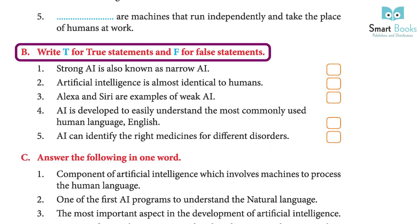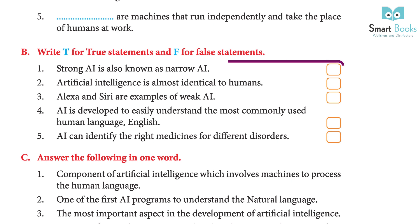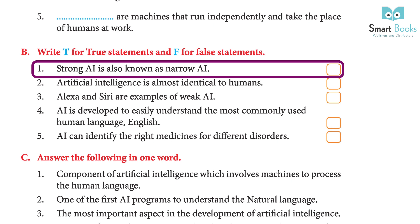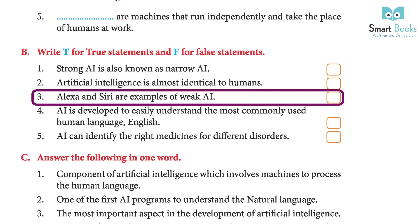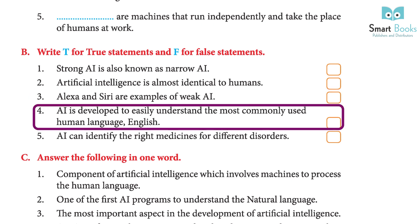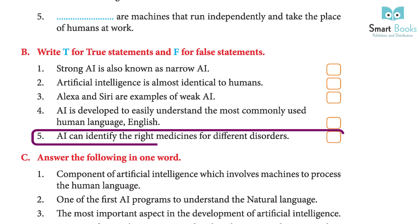Write T for True and F for False: 1. Strong AI is also known as Narrow AI — Answer: False. 2. Artificial intelligence is almost identical to humans — Answer: True. 3. Alexa and Siri are examples of Weak AI — Answer: True. 4. AI is developed to easily understand the most commonly used human language, English — Answer: True. 5. AI can identify the right medicine for different disorders — Answer: False.